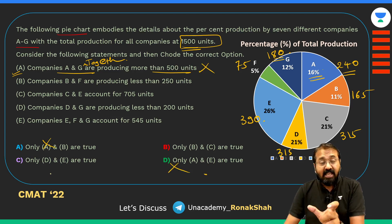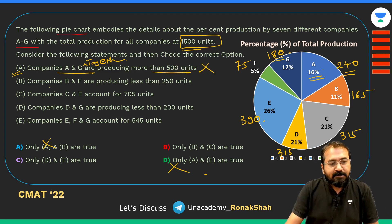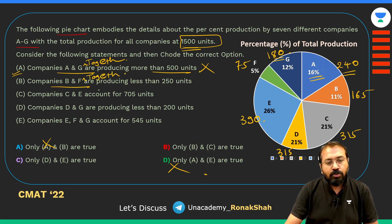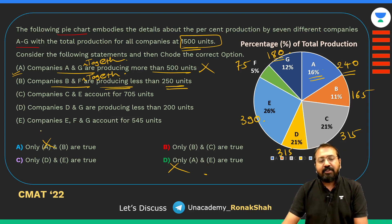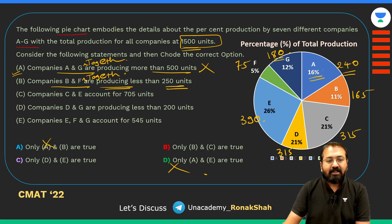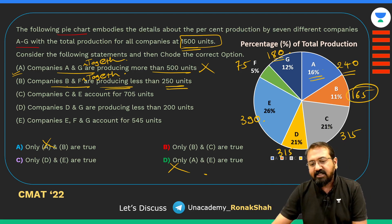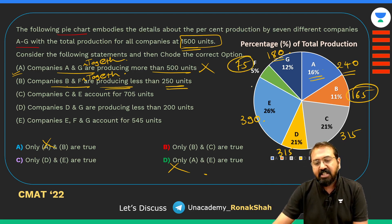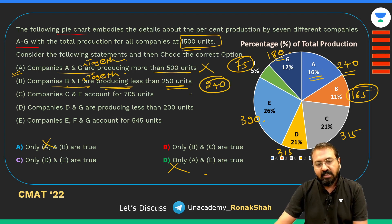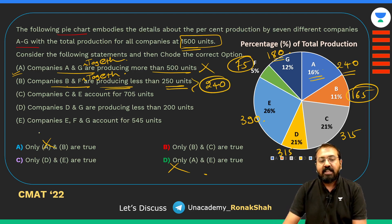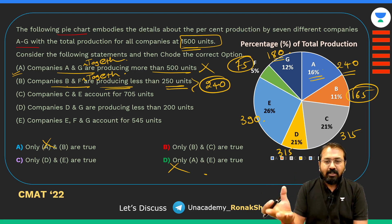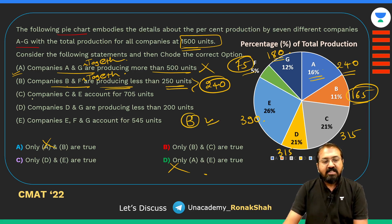Now let's check Statement B: company B and F together — once again they haven't mentioned 'together,' but this is how we'll assume it. B is 165 and F is 75, so together that's 240 units, which is definitely less than 250. And even if you consider them individually, each is still less than 250. So either way, Statement B is true.